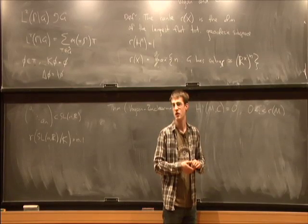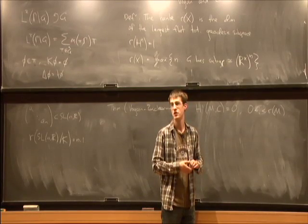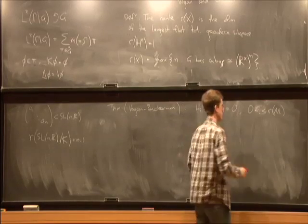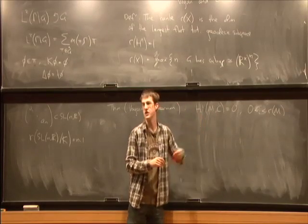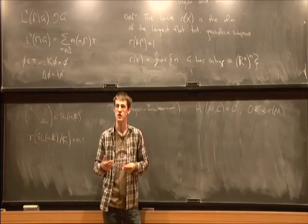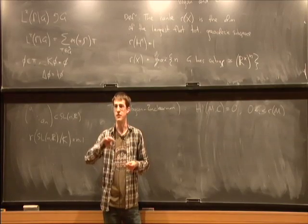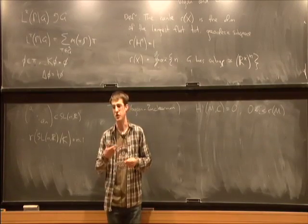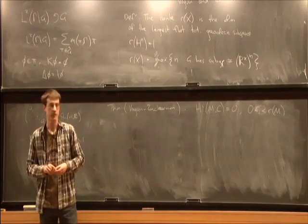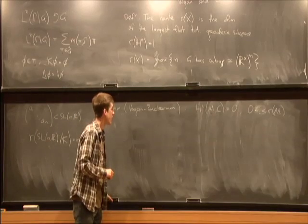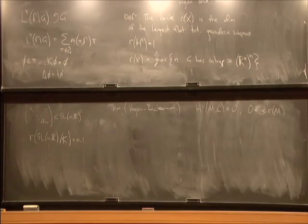H^i of M is trivial for i bigger than 0 and less than the rank of M. There are cases when you can go even further with this. There are certain degrees in which the trivial representation makes contributions, but these are very simple to understand and don't really reflect the geometry in any way.